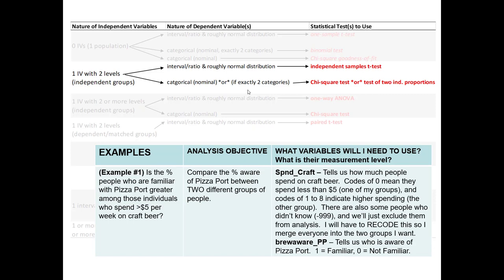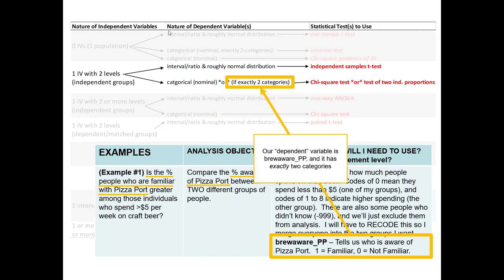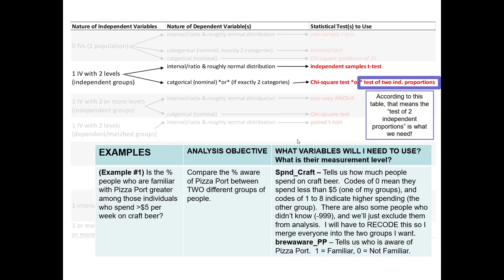Next I have to figure out the nature of my dependent variable. The dependent variable I'm interested in is the percentage awareness of Pizza Port. If I want to calculate a percentage, I'm treating it as a nominal variable. The variable is already set up as nominal — it only has two options: either people are familiar or not familiar. That tells me my dependent variable is categorical with exactly two categories, so the correct statistical test to use is the test of two independent proportions.